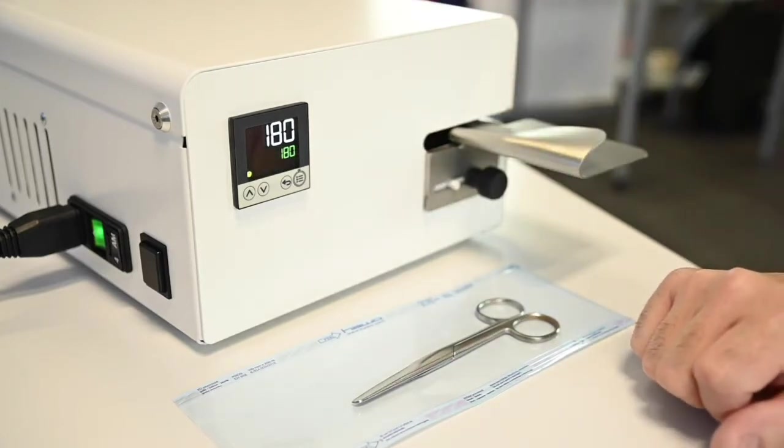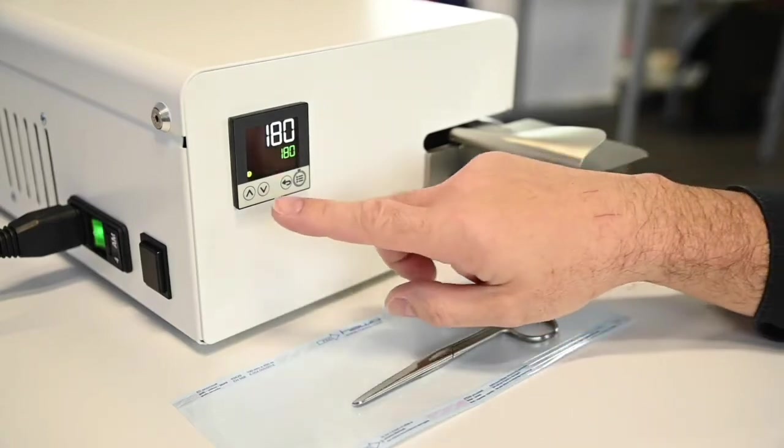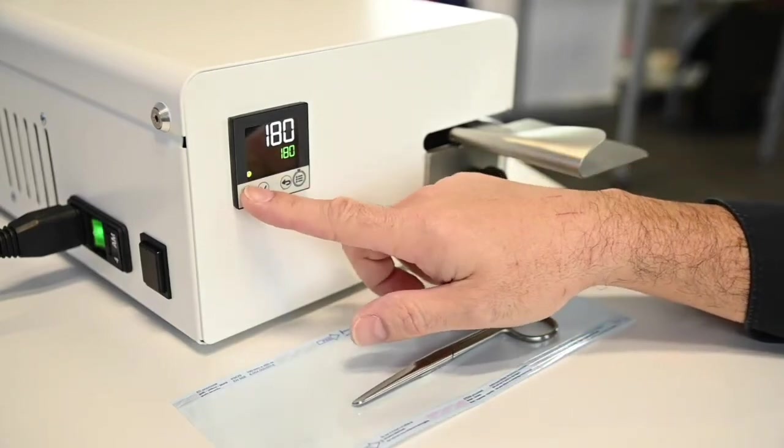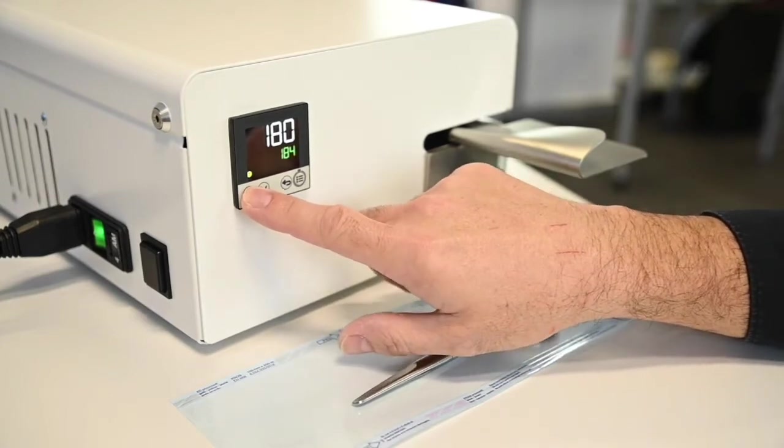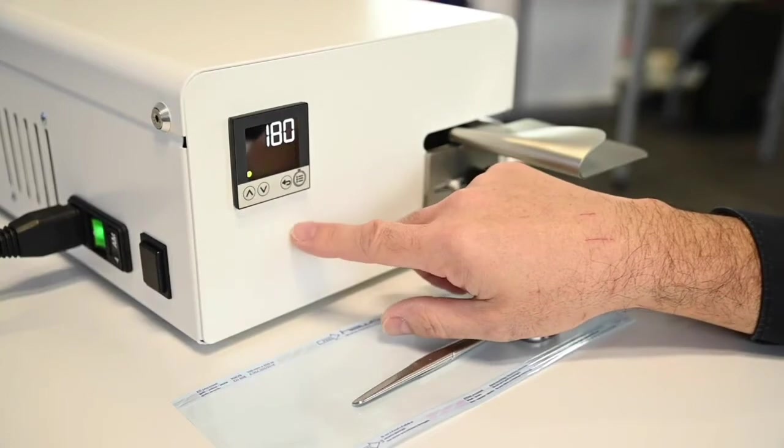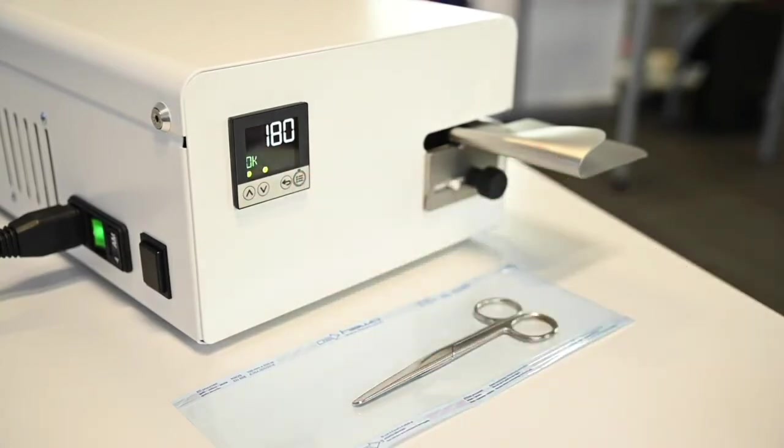Once nominal temperature has been reached it can be easily adapted to suit the sterile barrier system at hand. In our example we choose a new sealing temperature of 185 degrees. The temperature controller reacts instantly and starts to heat up.